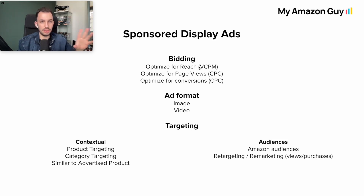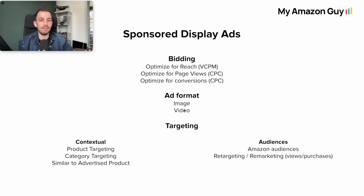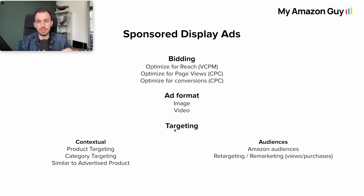To run a Sponsored Display ad you also need an asset — it can be an image or a video. Videos are a bit tricky because they require way more specs than Sponsored Brand videos: frame rate, buffer rate, and other requirements. The last thing needed is the targeting itself, which can go two different ways: contextual targeting or audience targeting.